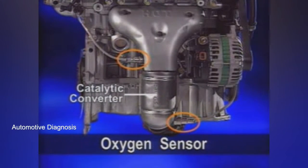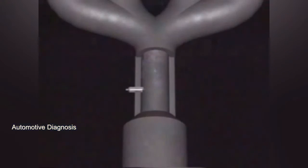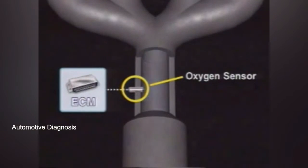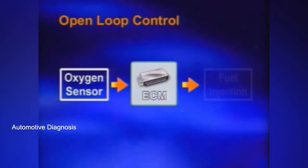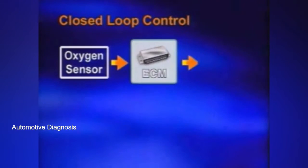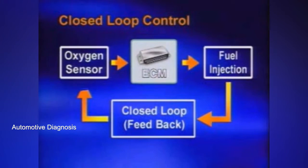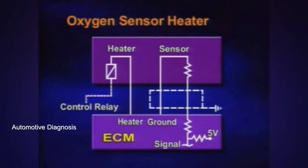The oxygen sensor is fitted on the exhaust pipe before the catalytic converter. The sensor reacts to the oxygen content in the exhaust system. Closed loop means that the sensor monitors the oxygen content and the sensor signal is used to control air-fuel mixture according to exhaust gas condition. The oxygen sensor has a heater element which heats the sensor to its optimum operating temperature of 600 degrees centigrade. The sensor is inoperative below 300 degrees centigrade.